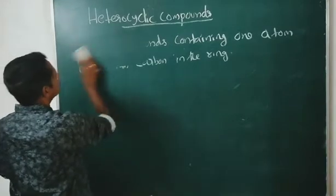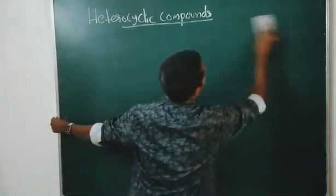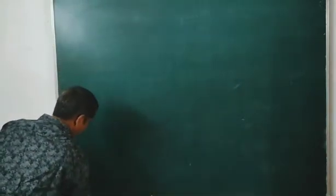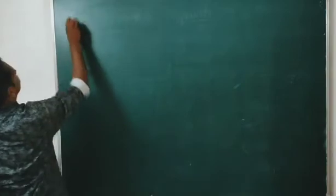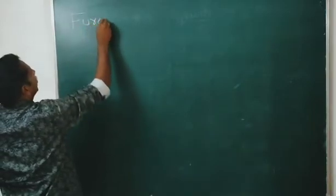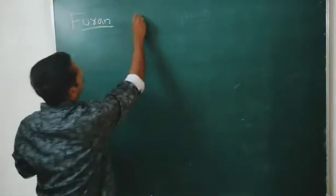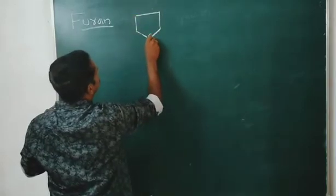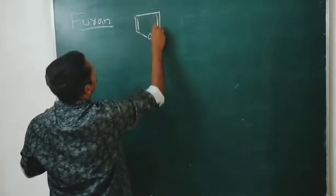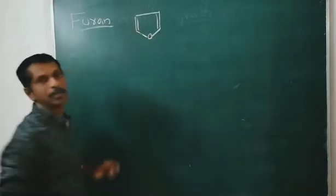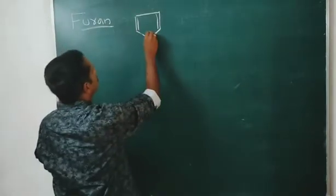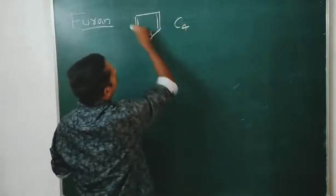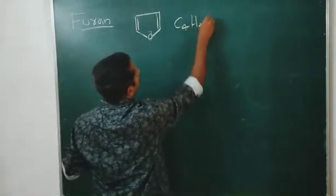Let us discuss some examples of heterocyclic compounds. The first compound is furan. Look at the structure — it's a five-membered heterocyclic compound. You can see that there is an oxygen atom in the ring, with a lone pair of electrons. Molecular formula: C4H4O.